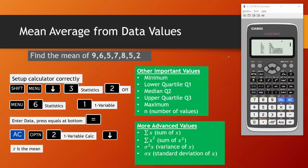Now if you go on to study some more advanced maths, for example if you do GCSE statistics or A level maths, you'll be interested in some more of these which includes sigma X which is simply the sum of all the X values added together, sigma X squared so squaring all the values and then adding them together, sigma squared X which is the variance of X, and sigma X which is the standard deviation of X.